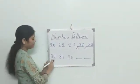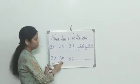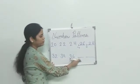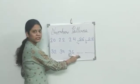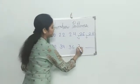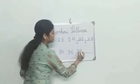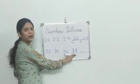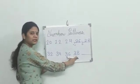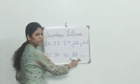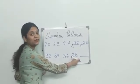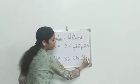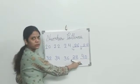Next example: 32, 34, 36. Now tell me the answer. Yes, here we write 38 — we skip 37 and write 38. Then we skip 39 and write 40. Very good.